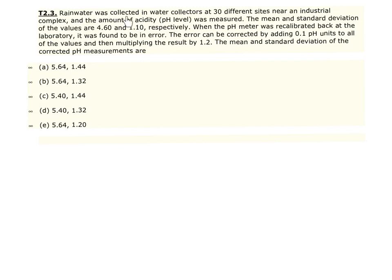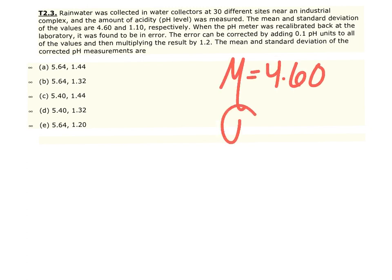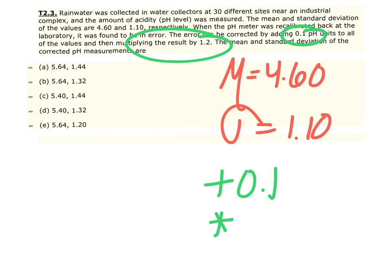Question 3: Rainwater was collected in water containers at 30 different sites near an industrial complex and the amount of acidity — the pH level — was measured. The mean and standard deviation of the values are 4.60 and 1.10 respectively. When the pH meter was recalibrated back at the laboratory, it was found to be in error. The error can be corrected by adding 0.1 pH units to all of the values and then multiplying that result by 1.2.